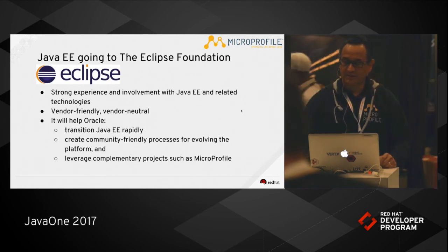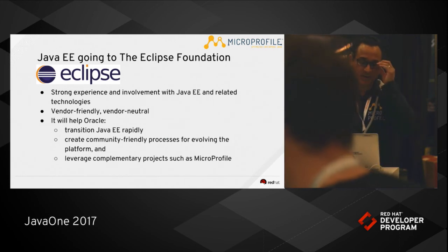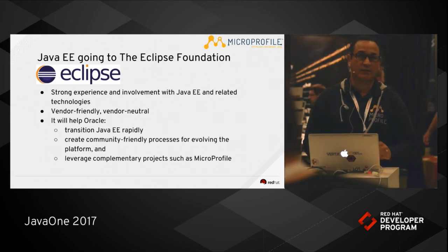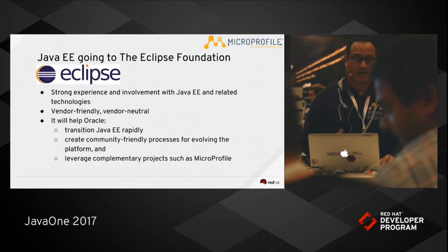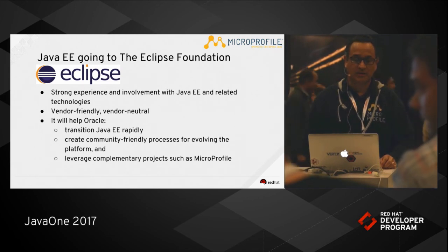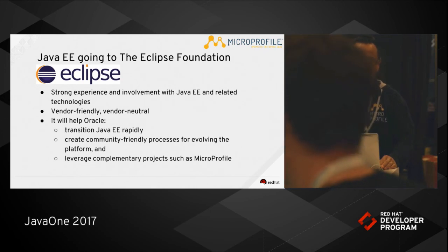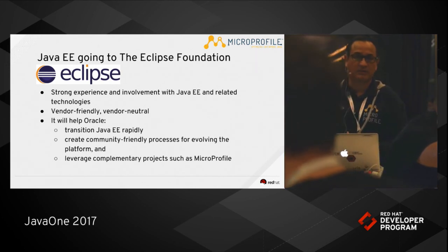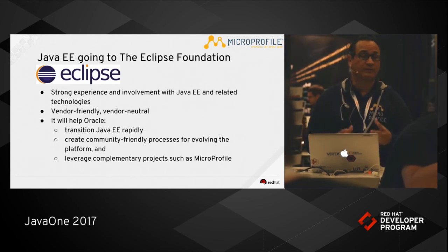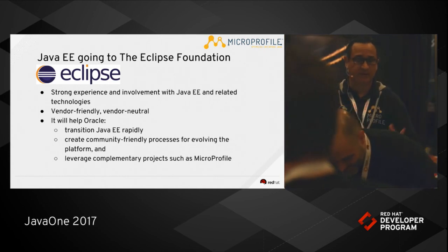A couple of words about Java EE: a few weeks ago, Oracle announced that Java EE is moving to the Eclipse Foundation. We see this as a great move and great for the future of Java EE. The Eclipse Foundation has strong experience and involvement with Java EE and related technologies, and it is vendor-friendly and vendor-neutral. Oracle believes this will help them transition Java EE rapidly using Eclipse, create community-friendly processes for evolving the platform, and leverage complementary projects such as MicroProfile. And that's where these two relate.